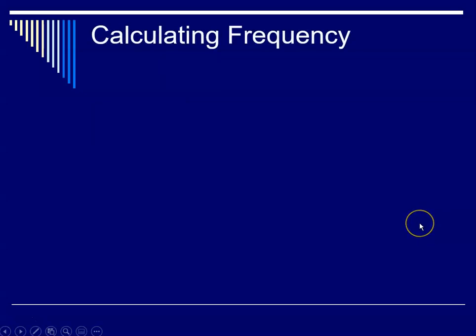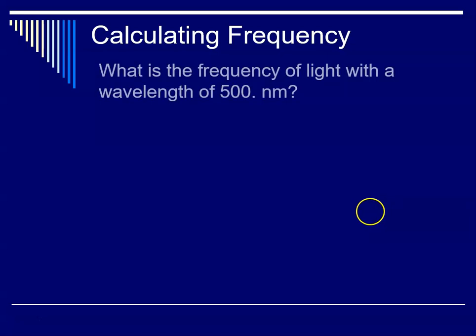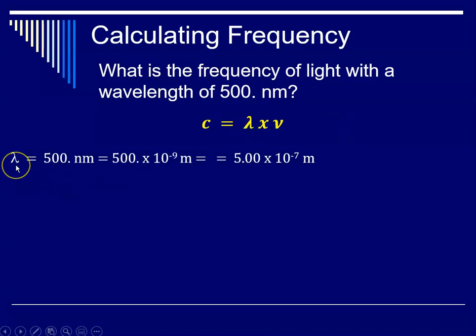So now we can use the equations that were in our first set of notes to calculate frequency and energy. So what is the frequency of light that has a wavelength of 500 nanometers? And remember, a nanometer is 10 to the minus 9 meter. And our equation is c, the speed of light, is equal to wavelength times frequency. So starting here with our wavelength, identifying variables, our wavelength is 500 nanometers, which is the same as 500 times 10 to the minus 9 meters.